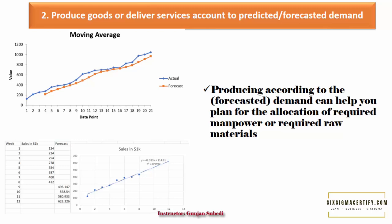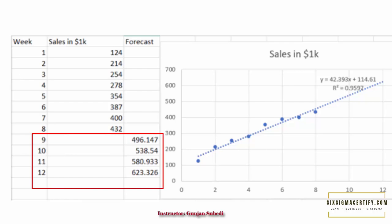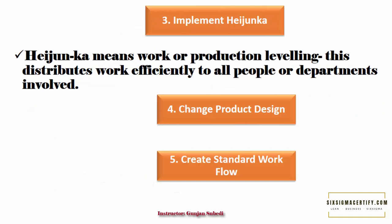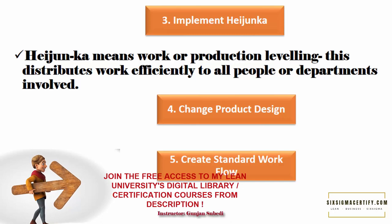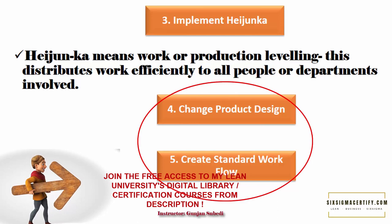We can also produce goods or deliver services according to the predicted or forecasted demand. Here, the company forecasted the demand for 9 to 12 months based on the demand of products for 8 months. Another way of reducing Mura is implementing the lean tool called Heijunka, or work leveling or production leveling. Heijunka also helps in reducing Muri, or work pressure. Mura can also be reduced with other methods like changing product design and creating standard workflows for all operators.